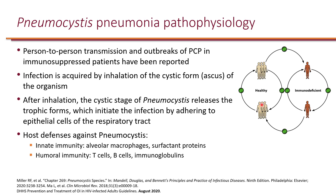When it comes to host defenses, there is innate immunity: alveolar macrophages as well as surfactant proteins protect individuals from this organism. There is also humoral immunity — T cells, B cells, and immunoglobulins from the B cells are involved. This explains why patients with compromised T cells are at increased risk of getting PCP.